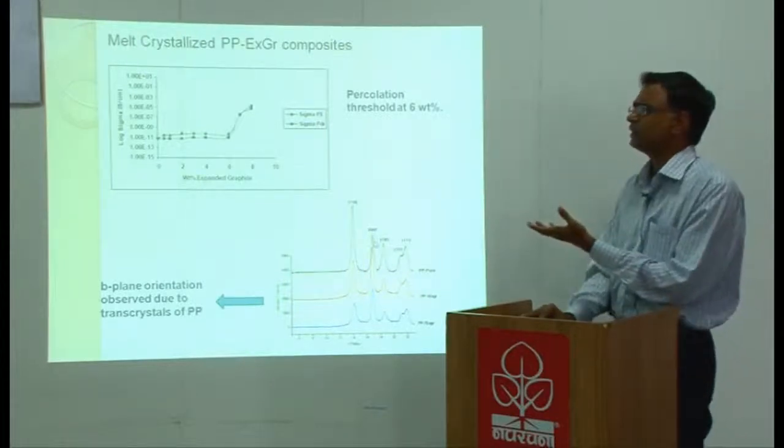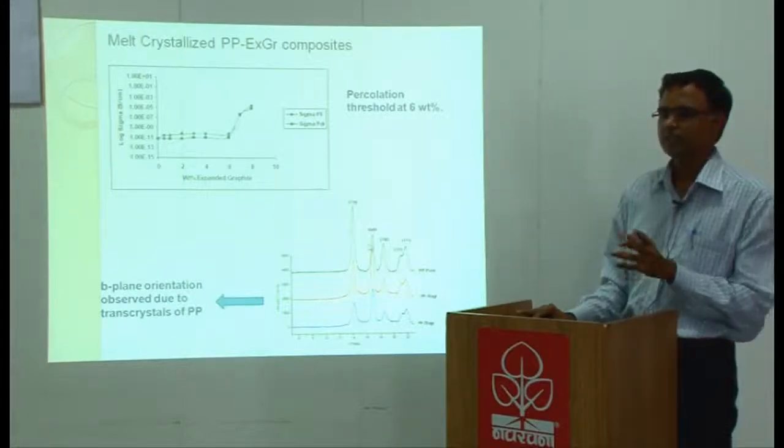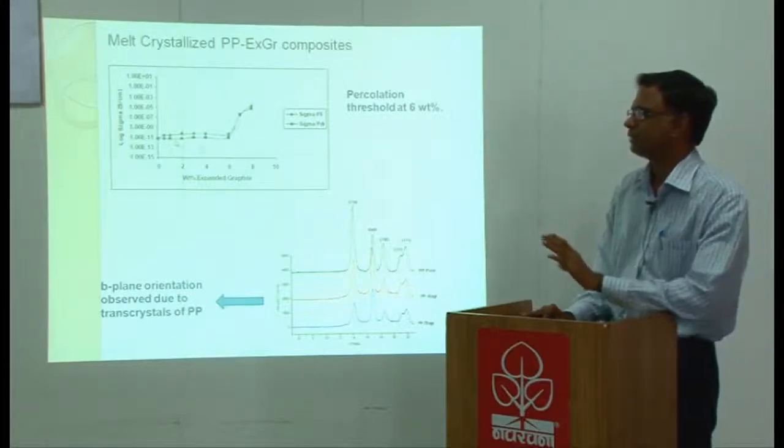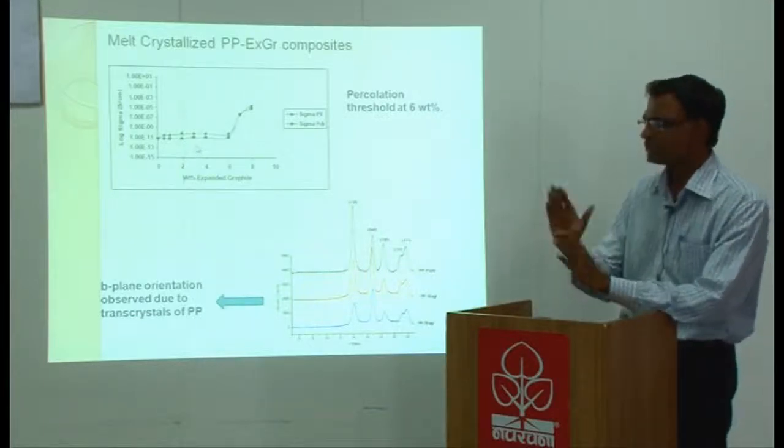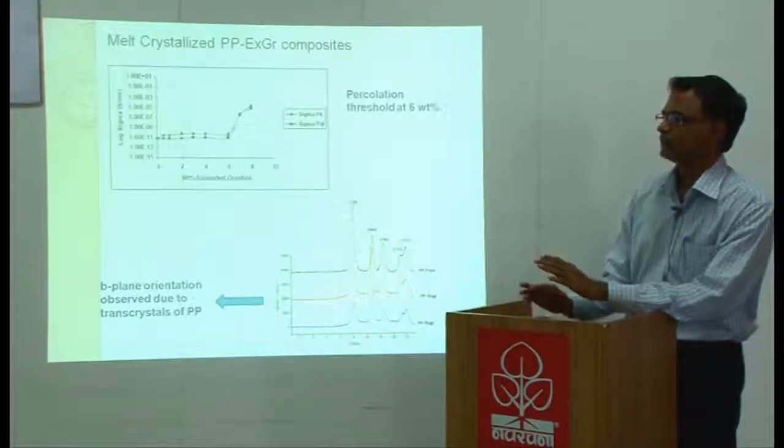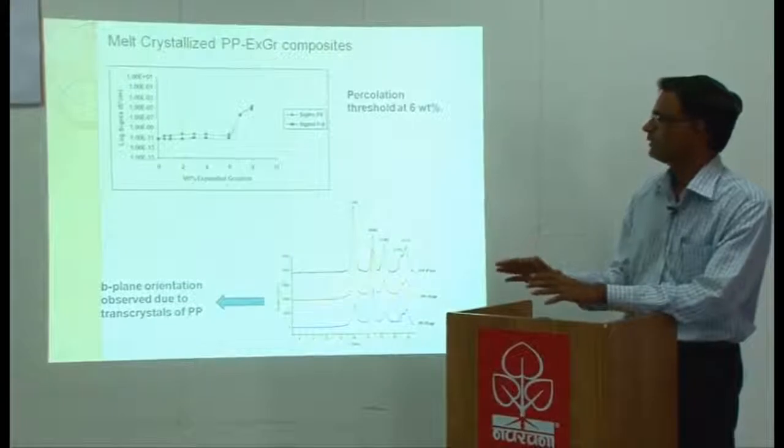Why am I telling about processing routes? Because ultimately you want to make a product. For example, I have identified PP and 4 weight percent expanded graphite as my base material for making a bipolar plate. I just go for injection molding.